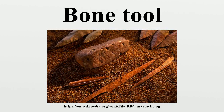Bone spear points and bi-points have been found throughout the world. A mastodon rib bone found in Washington State was discovered in the 1970s with a broken bone projectile point stuck in it. Recent radiocarbon dating reveals that it is about 14,000 years old. This discovery is significant because it predates the arrival of the Clovis people and may help rewrite human history in the Americas.